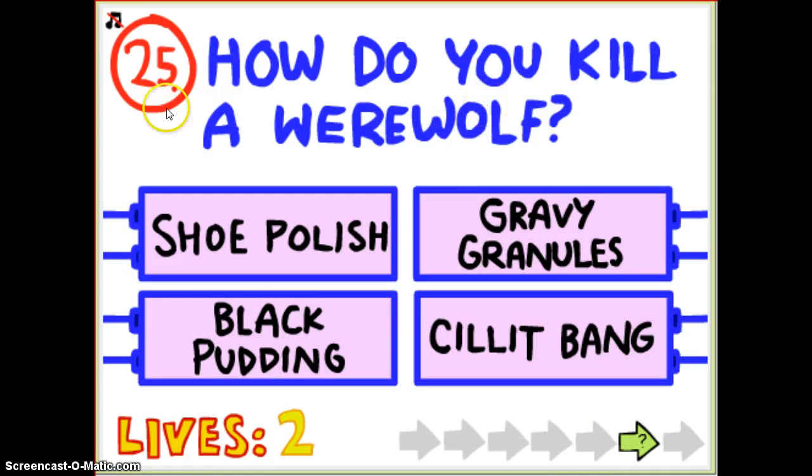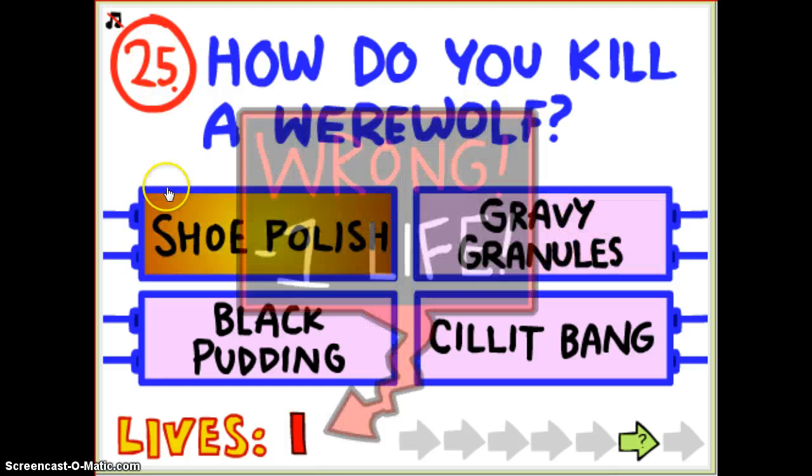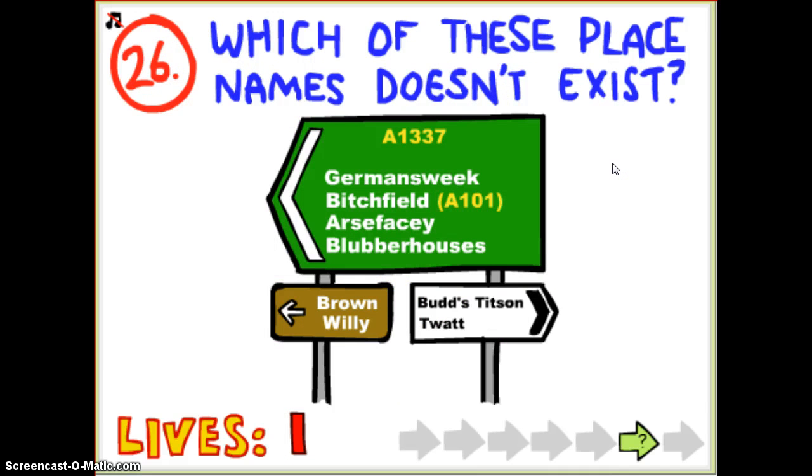I don't get why it's brand. I click the V. How do you kill a werewolf? Gravy granules, shoe polish, shoe polish. I don't get it.